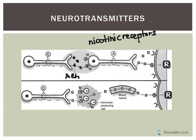The post-ganglionic fibers are labeled A because these fibers are adrenergic - they release norepinephrine. Most fibers of the sympathetic nervous system are adrenergic fibers.